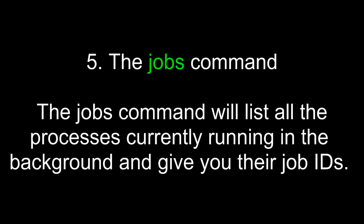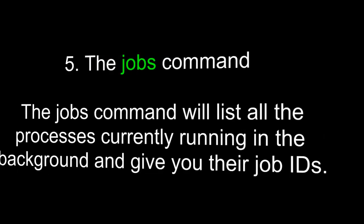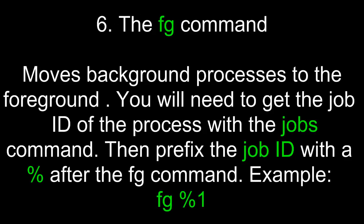The FG command moves background processes to the foreground. You will need to get the job ID of the process with the jobs command, then prefix it with the percent symbol after the FG command. For example, 'FG %1' would move that job ID process to the foreground.